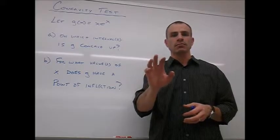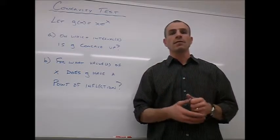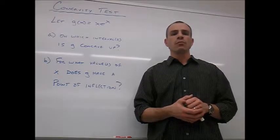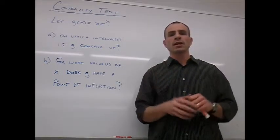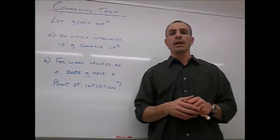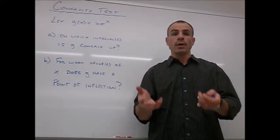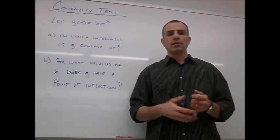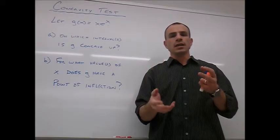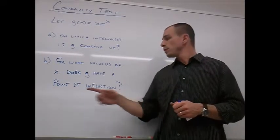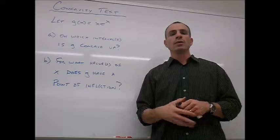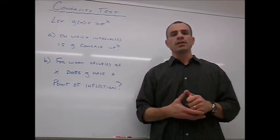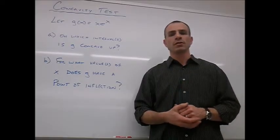The idea is that we get the second derivative, set it equal to zero, or find when it does not exist. Then we make a sign chart and check positive or negative values. A positive second derivative means the function is concave up; a negative second derivative means concave down. If the sign changes, that's a point of inflection. We do basically the same thing as with the first derivative, only with the second derivative.